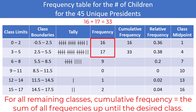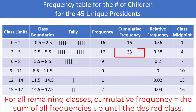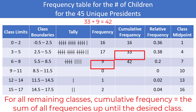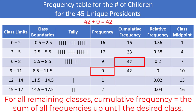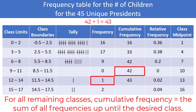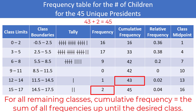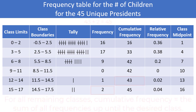We can do the same for the remaining classes. The easiest way is to take the previous cumulative frequency and add the frequency of the class you are analyzing. So 33 plus 9 gives us 42. The cumulative frequency of the fourth class is also 42 since the frequency is 0. Add 1 to get 43, and another 2 to get the final cumulative frequency of 45. The cumulative frequency for the last class should always equal the total of all frequencies, which is the same as your sample size.